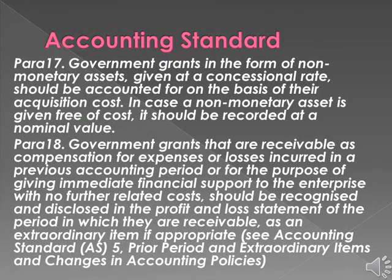Para 17: Government grants in the form of non-monetary assets, given at a concessional rate, should be accounted for on the basis of their acquisition cost. In case a non-monetary asset is given free of cost, it should be recorded at a nominal value. Para 18: Government grants that are receivable as compensation for expenses or losses incurred in a previous accounting period, or for the purpose of giving immediate financial support to the enterprise with no further related costs, should be recognized and disclosed in the profit and loss statement of the period in which they are receivable as an extraordinary item if appropriate — see Accounting Standard AS 5: Prior Period and Extraordinary Items and Changes in Accounting Policies.